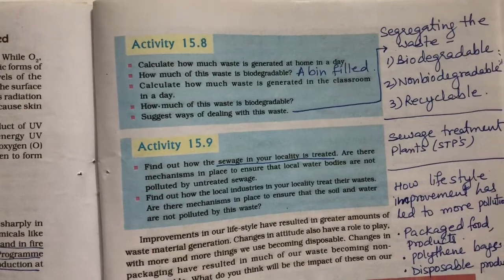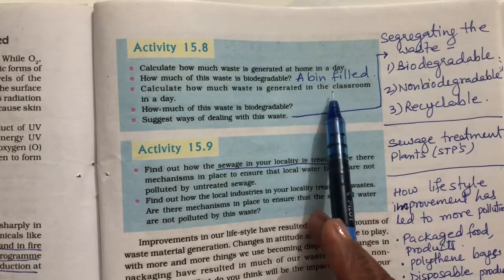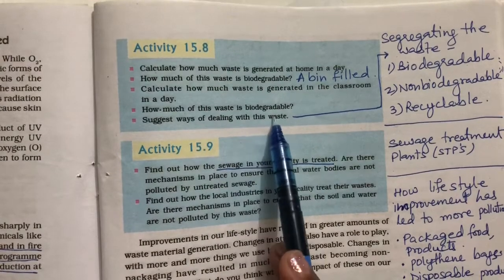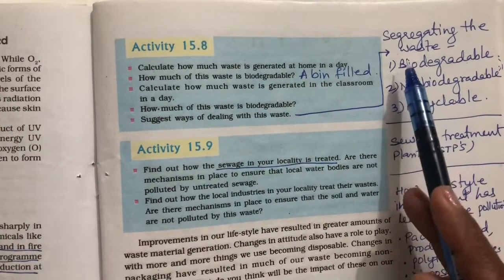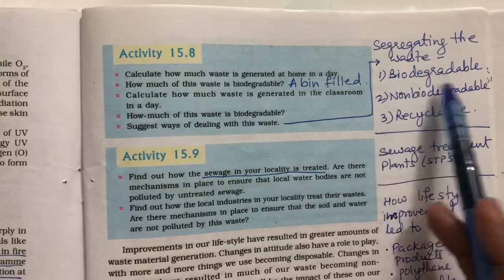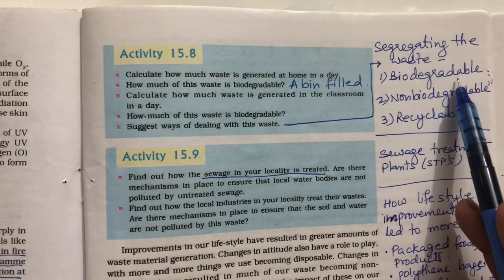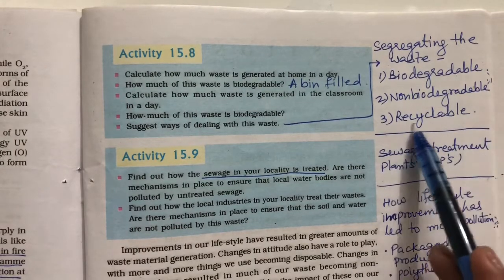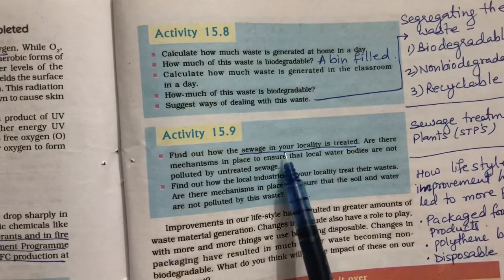In our homes we produce garbage that can be biodegradable, non-biodegradable, or recyclable. We need to segregate waste into these three categories and dispose of them appropriately. Biodegradable waste can go into a compost pit, non-biodegradable can be incinerated, and recyclable materials can be recycled.